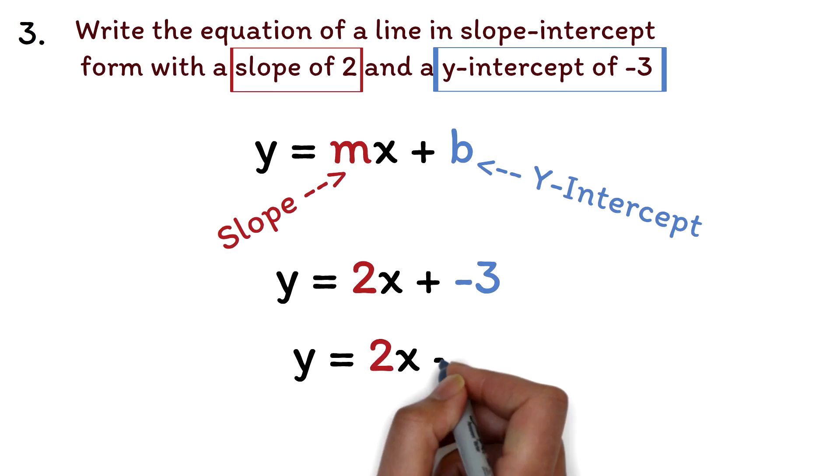So, this is y equals 2x minus 3. Therefore, the equation of the line with a slope of 2 and a y-intercept of negative 3 is y equals 2x minus 3.